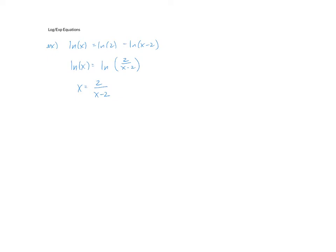So once we have gotten rid of the logs, now it's just a basic algebraic equation. I'll go ahead and multiply both sides by (x-2). I'll distribute the x. Once again, we have a quadratic equation: x² - 2x - 2 equals zero. I want to see if this factors first. It doesn't look like it factors, so now I'll have to use either the completing the square method or quadratic formula.